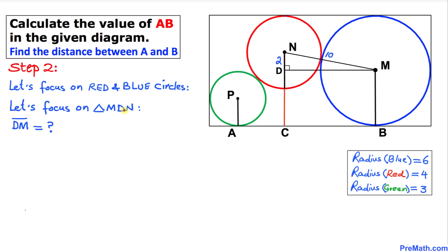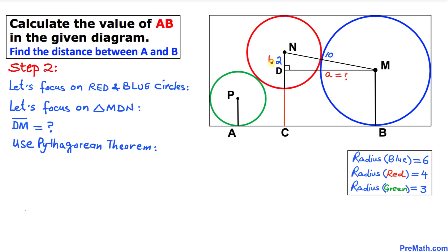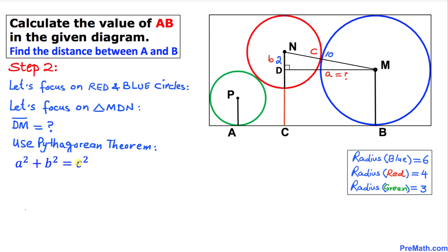Triangle MDN is a right triangle, so we use the Pythagorean theorem: A² + B² = C². Here A is the side we want to find, B is 2, and C is 10. Filling in: A² + 2² = 10², which gives A² + 4 = 100. Moving 4 to the other side: A² = 100 − 4 = 96.